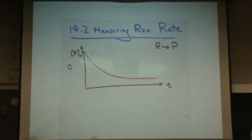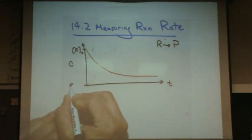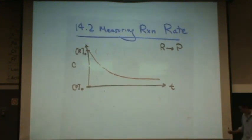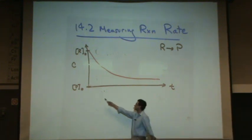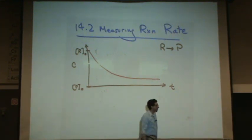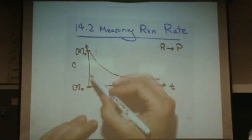Now let's say the product started off at zero. So the initial concentration of the products started off at zero. You can imagine that those go up, that one goes up over time.